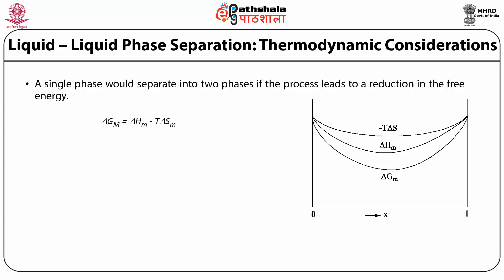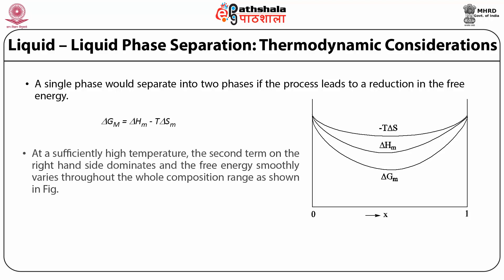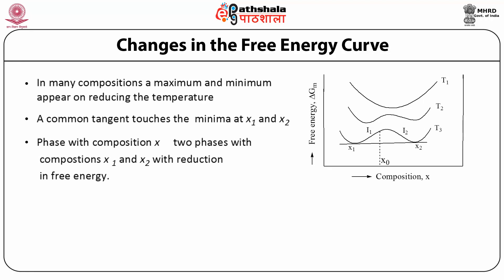The figure on the right shows free energy versus composition at high temperature where the system exists as a single phase. At a sufficiently high temperature, the second term of this equation dominates and the free energy smoothly varies throughout the whole composition range. If the first term is large and positive or if the temperature is reduced, a maximum and two minima occur in the ΔG versus composition plot as the temperature is reduced below a certain temperature called the upper critical temperature, also known as the consolute temperature.